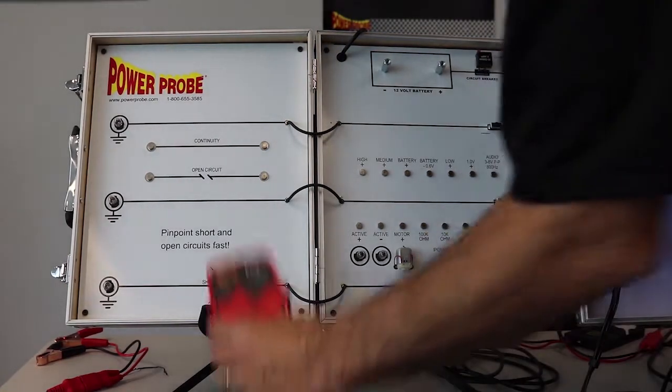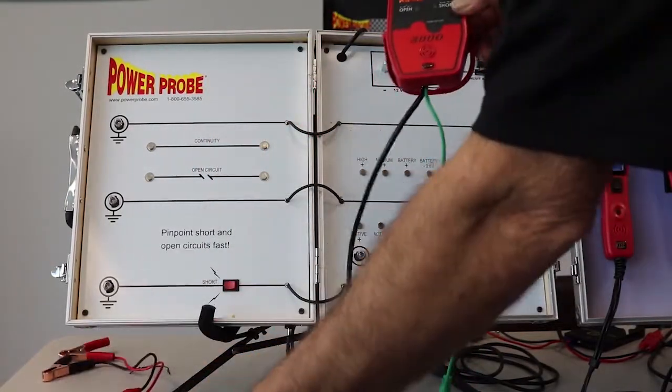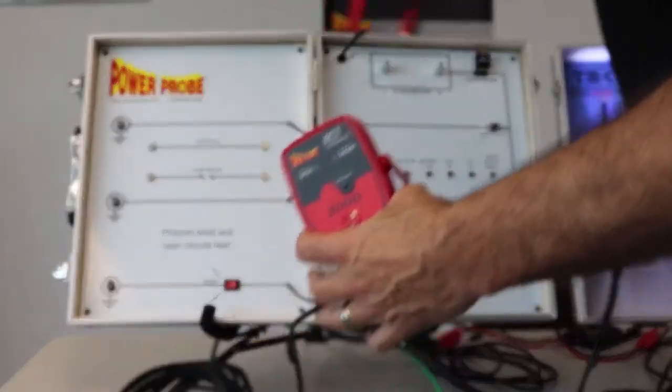So real quickly, this is the transmitter. It has a 20 foot lead and we'll connect to the vehicle's battery.